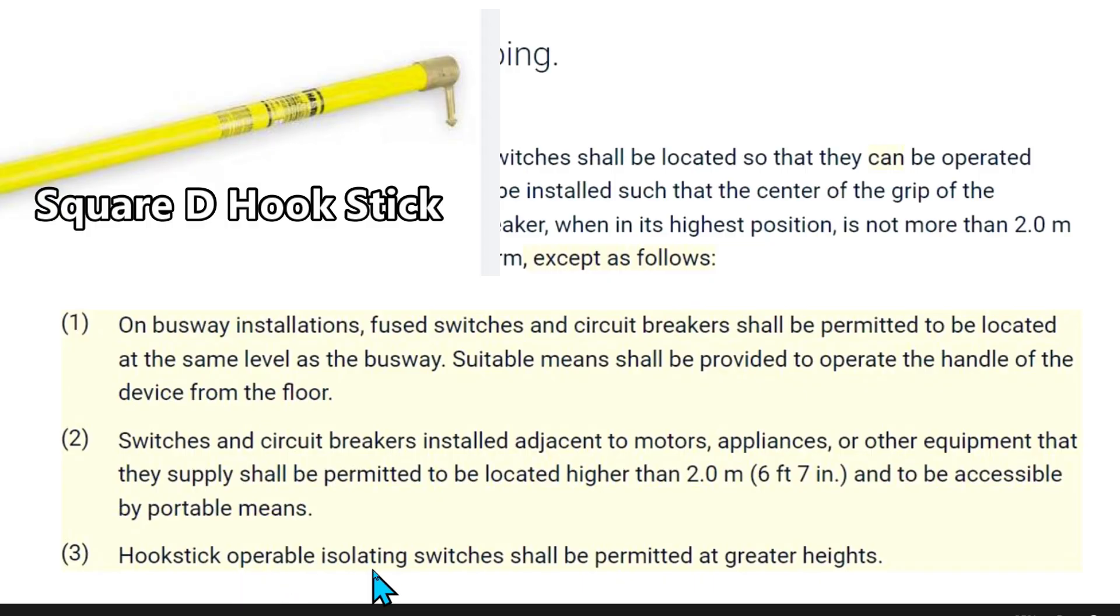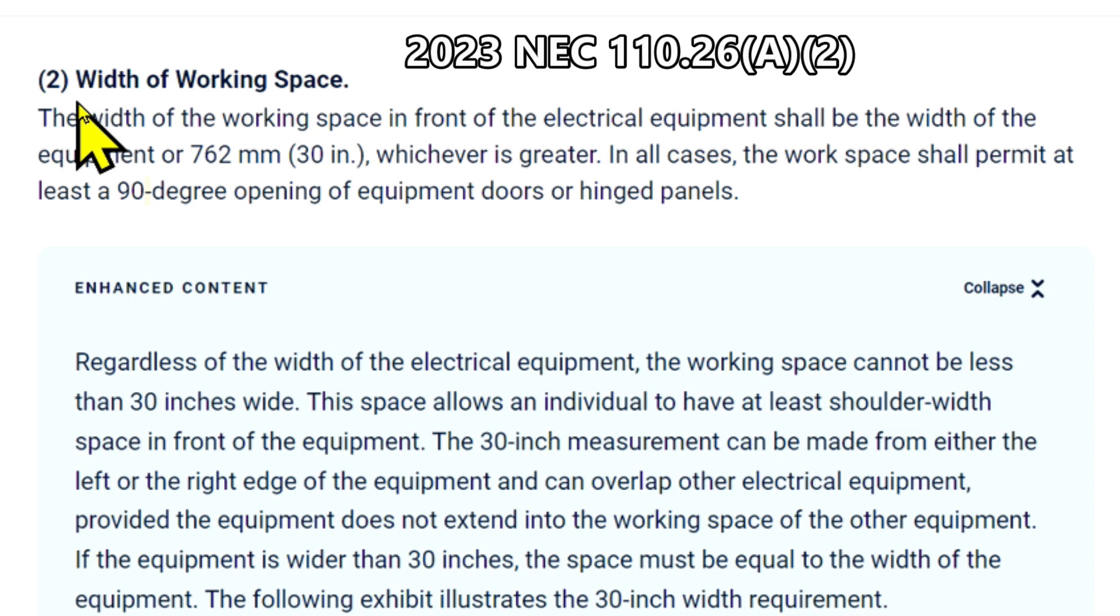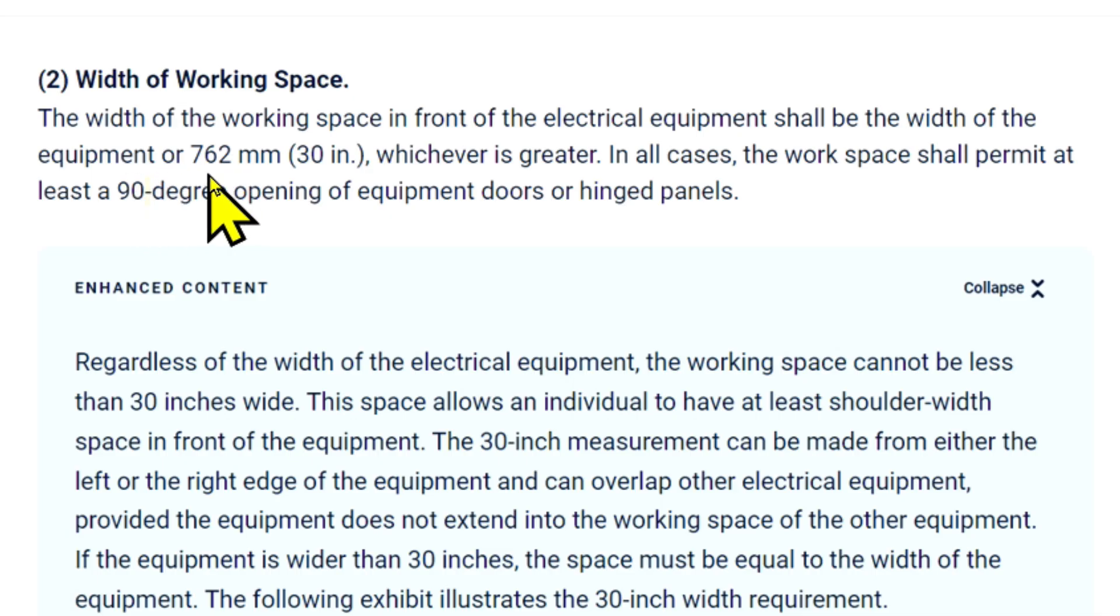Number three, hookstick operable isolating switches shall be permitted at greater heights. 110.26a2, width of working space: the width of the working space in front of the electrical equipment shall be the width of the equipment or 762 millimeters, that's 30 inches, whichever is greater. In all cases the work space shall permit at least a 90 degree opening of equipment doors or hinged panels.